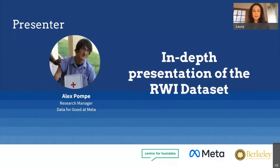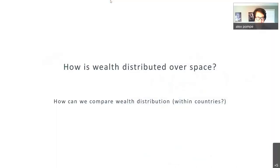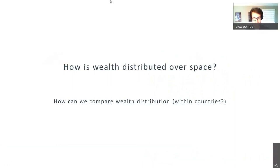I'll now pass it to Alex Pompey to jump into the Relative Wealth Index and how we built it. I'm going to explain what the Relative Wealth Index is and give a condensed overview of how it is constructed, and then Josh will tell you how it's been used to produce real-world impact since its release. Our problem statement is to better understand how wealth is distributed over space, and how we might compare wealth distribution within a country.